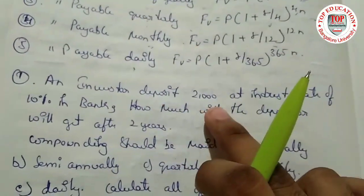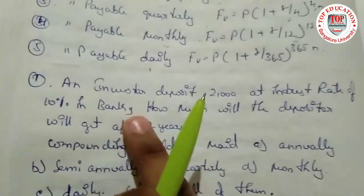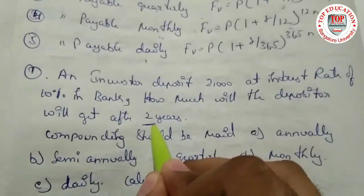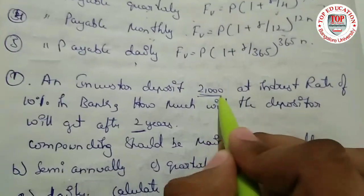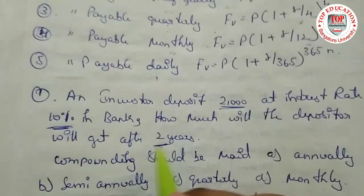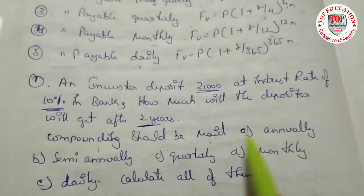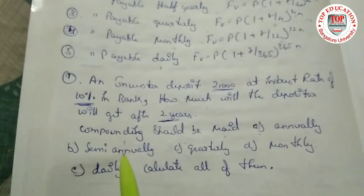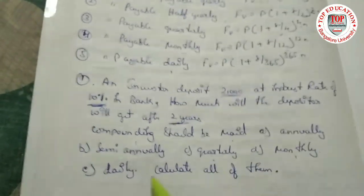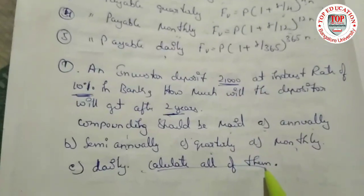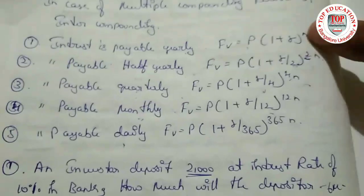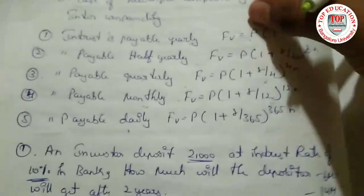An investor deposits rupees 2,000 at an interest rate of 10 percent. How much will the depositor get after two years? Compounding should be made annually, semi-annually, quarterly, monthly, and daily — calculate all of them. This type of question can be asked for 14 marks, or they may ask only two or three methods for six marks.